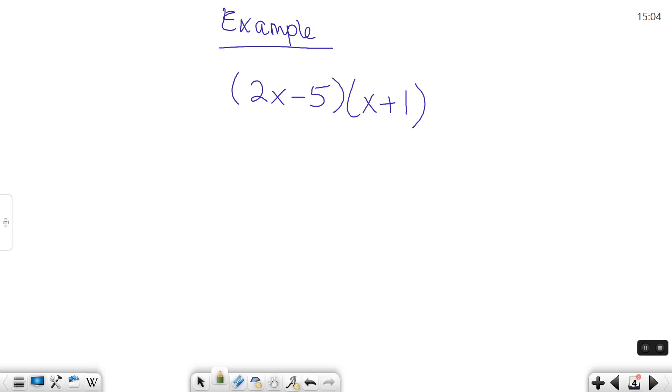2x minus 5 times x plus 1. Again, we can use the FOIL method for this. The first terms are 2x and x. You multiply them together, you get 2x squared. The outer terms are going to be 2x and 1. 2x times 1 is just 2x.